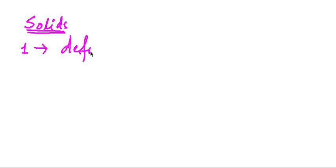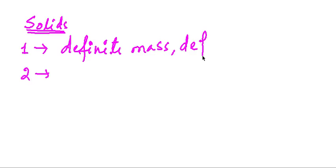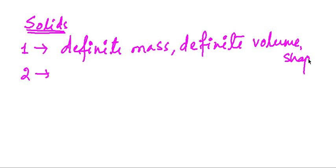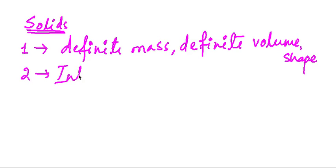Solids generally have definite mass, definite volume, and shape. If you take a piece of rock, its mass, volume, and shape will remain the same. You can apply force and break it, but its composition and volume will not change. In solids, the particles are kept very close to each other, so we say the intermolecular distance is short.